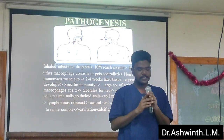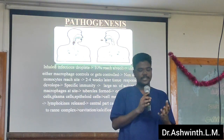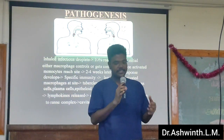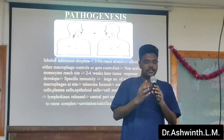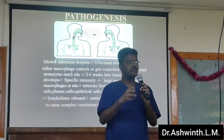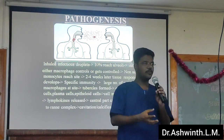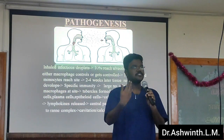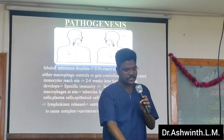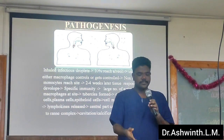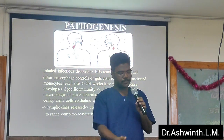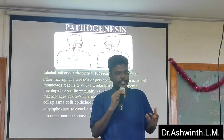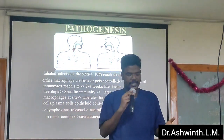Coming to the pathogenesis, the infectious droplets which get airborne get inhaled, but surprisingly only 10% of the bacteria reach the alveoli. Either the macrophage engulfs it and forms a phagosome, then fuses with the lysosome to form a phagolysosome and the bacteria dies. In the other case, the bacteria tries to control the macrophage. After 2 to 4 weeks, the tissue response develops, resulting in specific immunity with a large number of activated macrophages at the site, and tubercles are formed. Thus, the name tuberculosis.